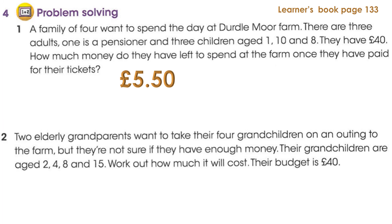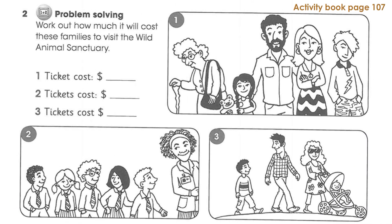Number two: two elderly grandparents want to take their four grandchildren on an outing to the farm, but they're not sure if they have enough money. Their grandchildren are aged two, four, eight, and fifteen. Work out how much it will cost. Their budget is £40. The answer is £37. Try to do this with friends or family — look at the prices and make up your own problems. It's a fun game.